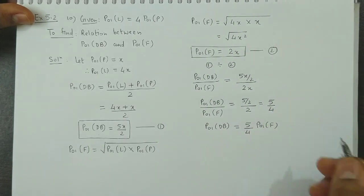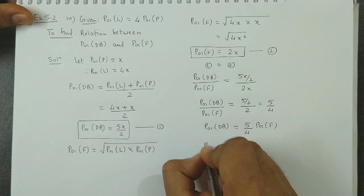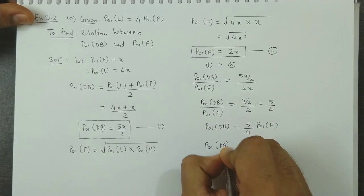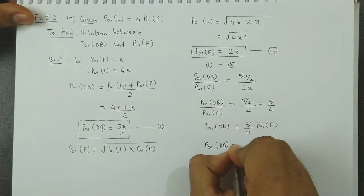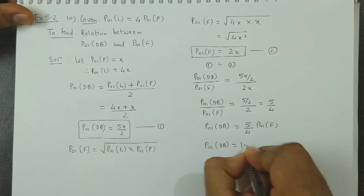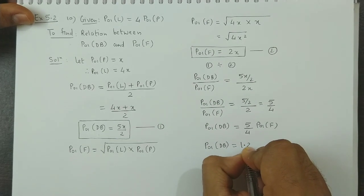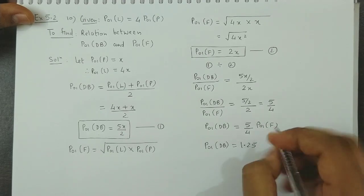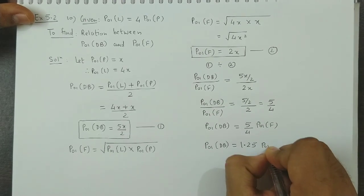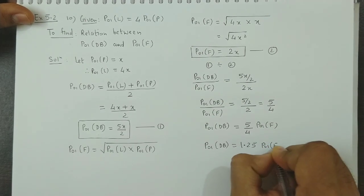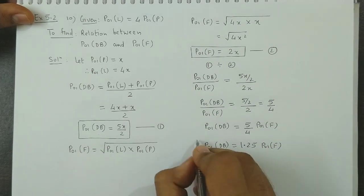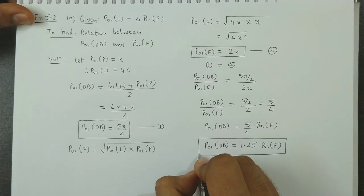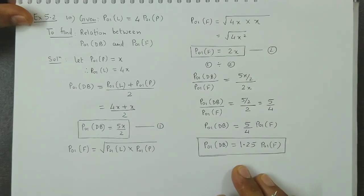Cross multiplying, we get that Dorbisch-Bowley's index is 5/4 times Fisher's index. Since 5/4 equals 1.25, we can say Dorbisch-Bowley's index is 1.25 times Fisher's index. This is the relation between Dorbisch-Bowley's index and Fisher's index.